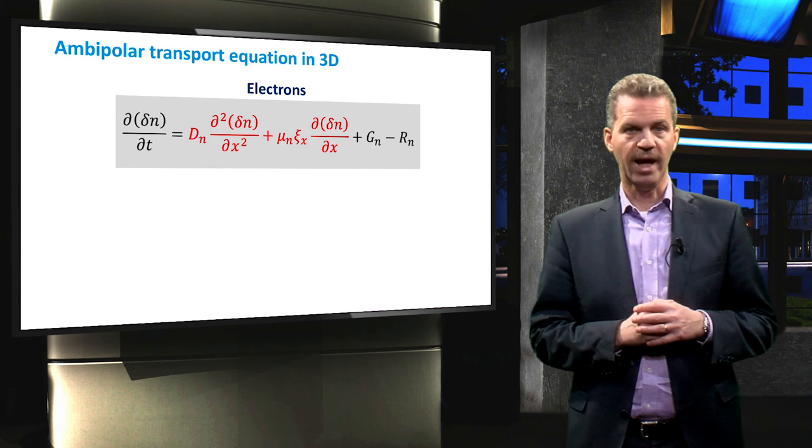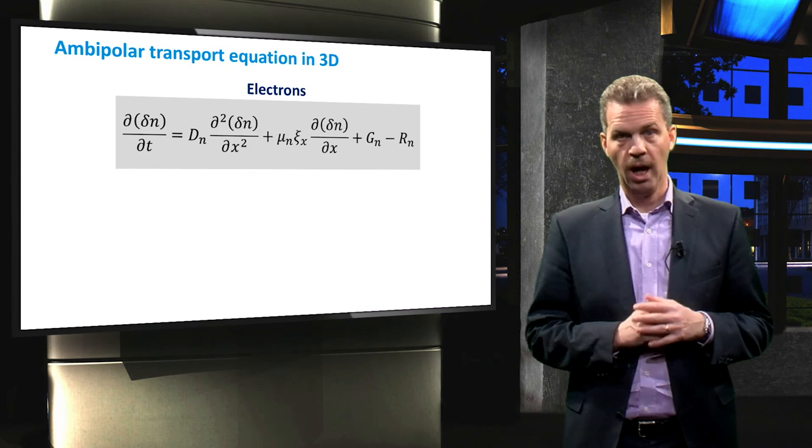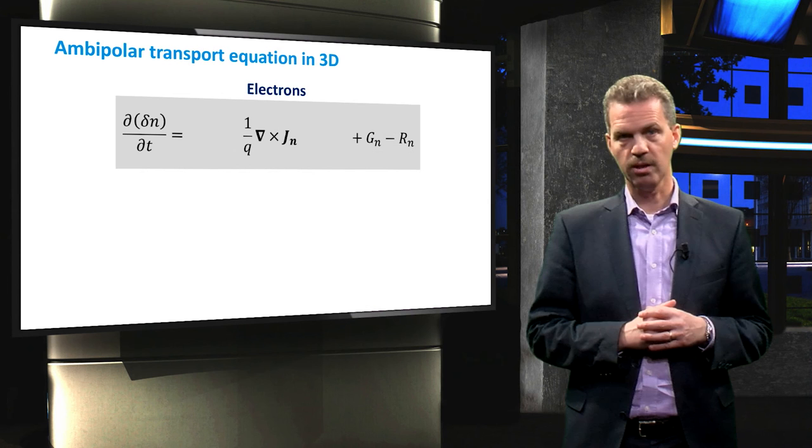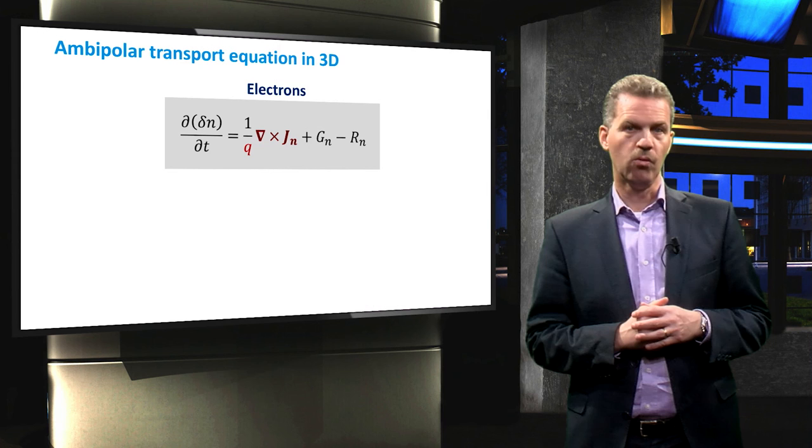When we expand these terms to three dimensions, we obtain the following relation. It is the cross product of the NABLA operator and the current density vector Jn, divided by the charge Q.